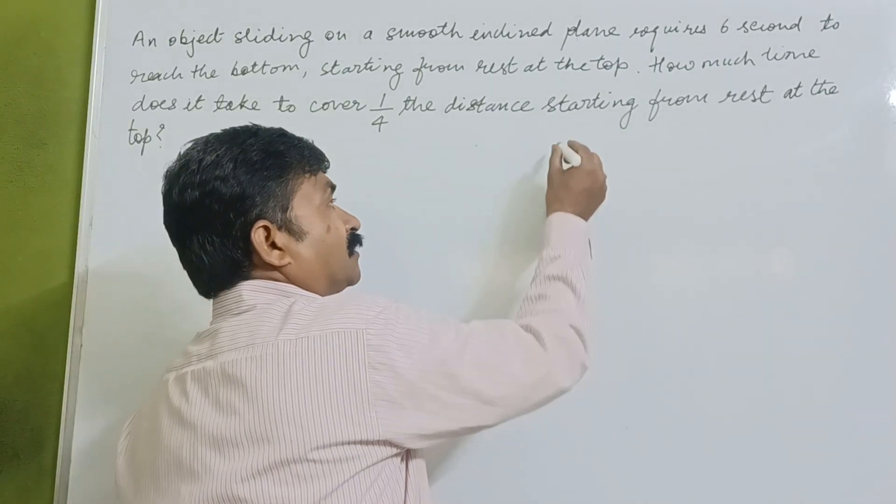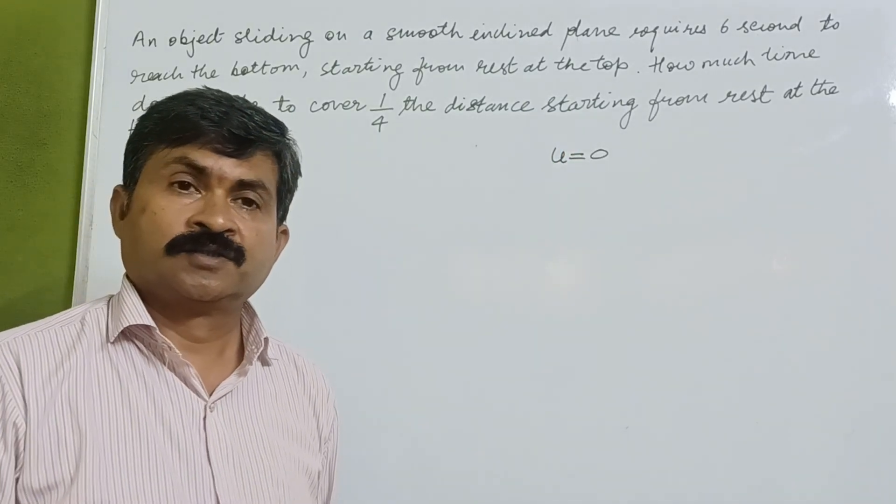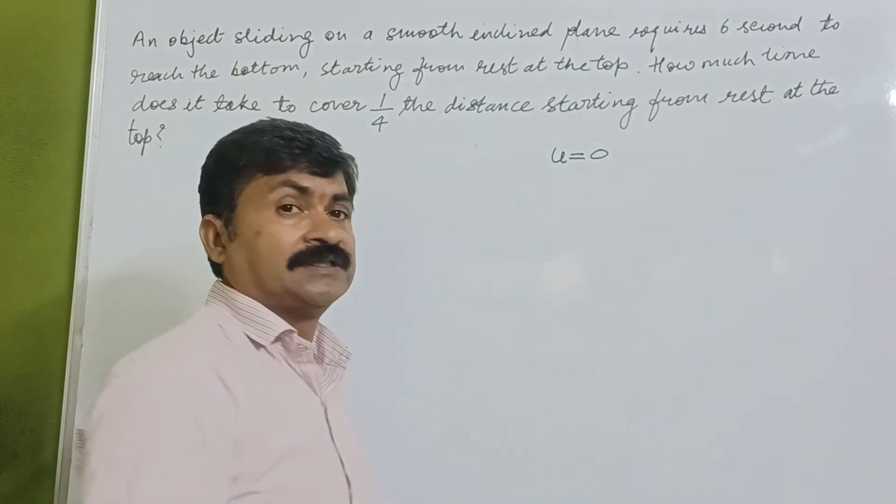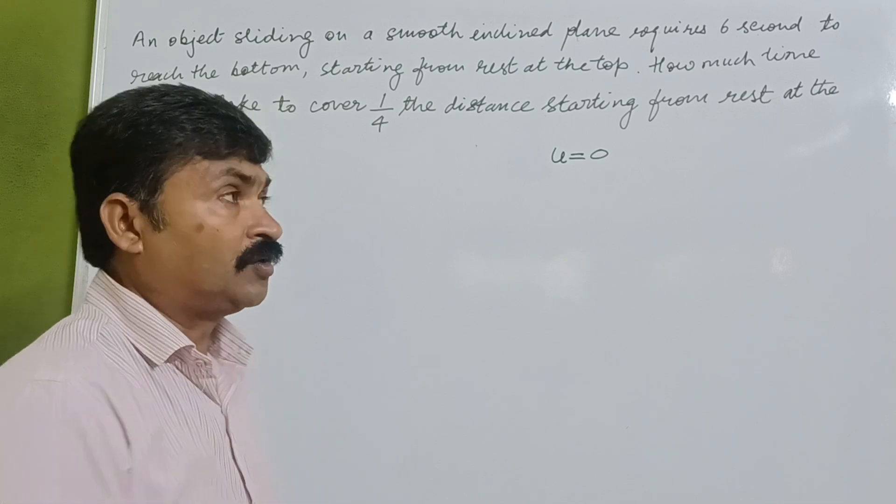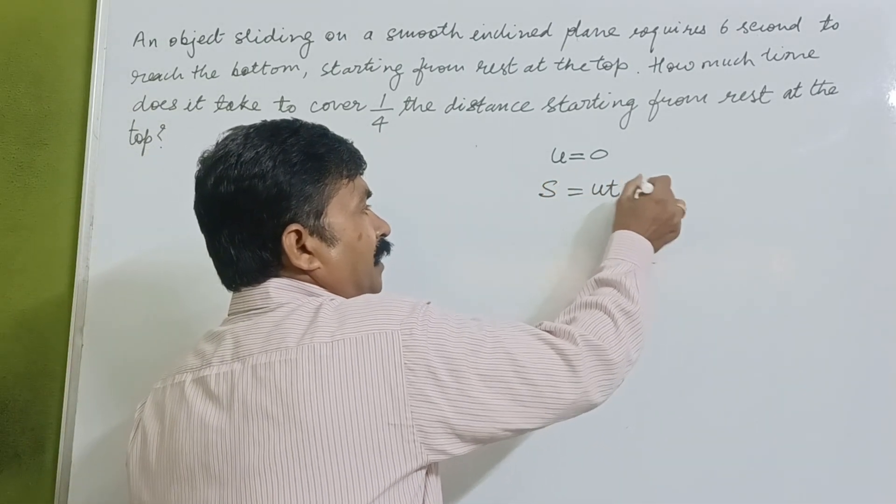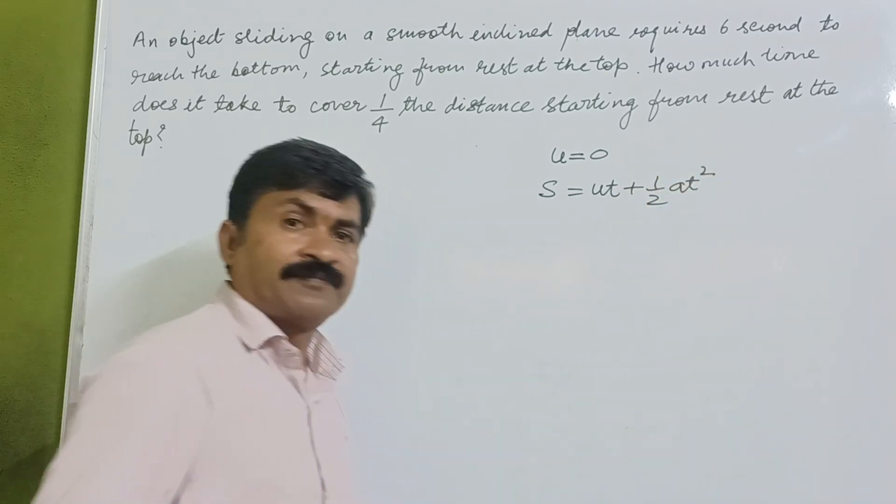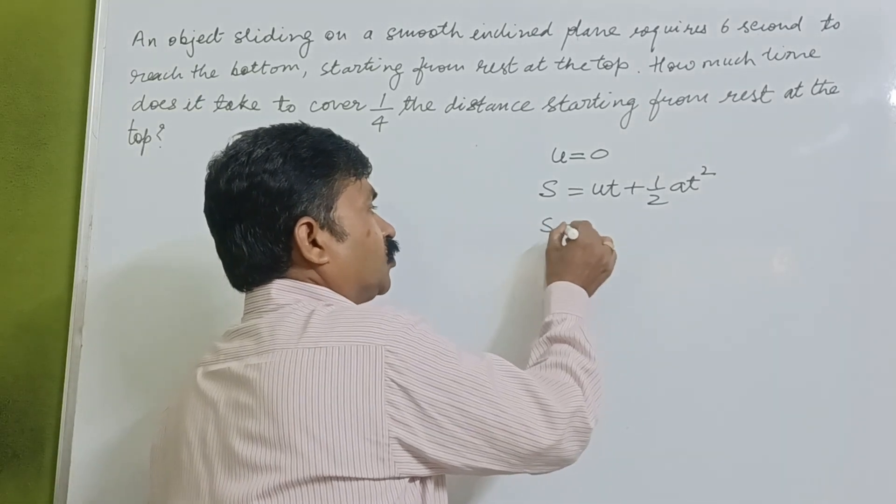When an object is at rest and starts sliding, the initial velocity is zero. We know the equation of motion as s = ut + 1/2 at². This is the basic equation. Since initial velocity is zero, it becomes s = 1/2 at².